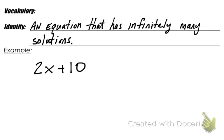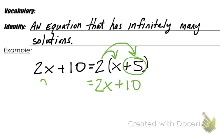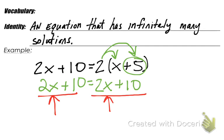For example, if you have 2x plus 10 and that's equal to 2 times the quantity x plus 5, we simplify either side first. The left side, 2x plus 10, is fine. On the right side, we use the distributive property: distribute that 2 to the x to get 2x, and distribute the 2 to the positive 5 to get plus 10. Both expressions on either side of the equal sign are exactly the same, meaning any number substituted for x would work. We call this an identity.